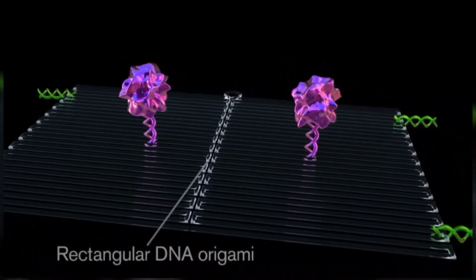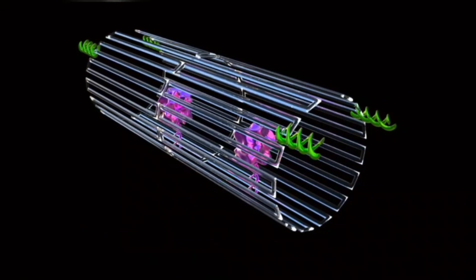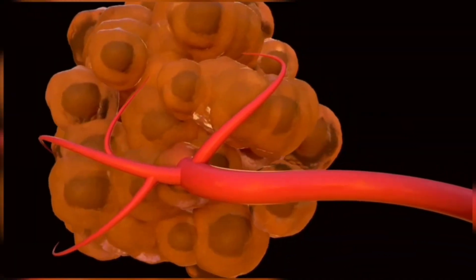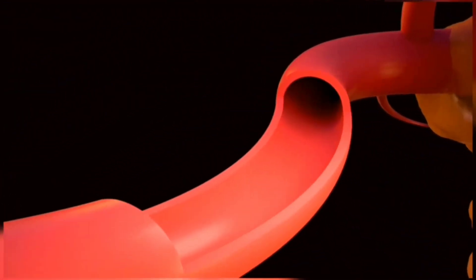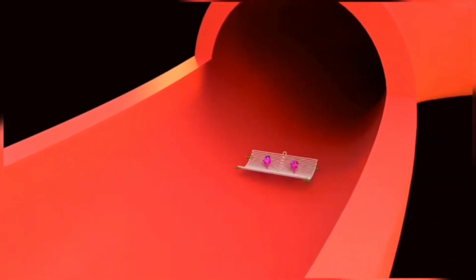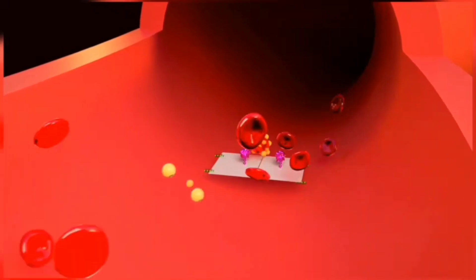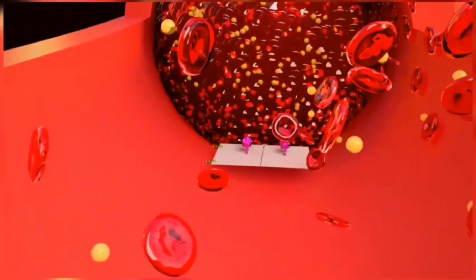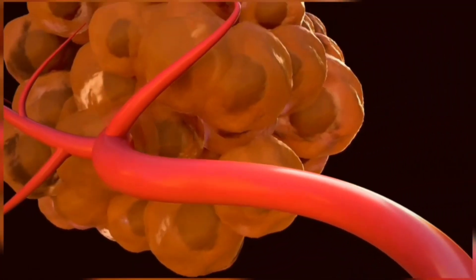This type of technology includes fragments of DNA capable of detecting the tumor, and an enzyme called thrombin, which causes blood coagulation. After detecting a tumor, both components interact, forming a barrier that prevents the passage of blood to the tumor, thus achieving the death of its tissues and its elimination.